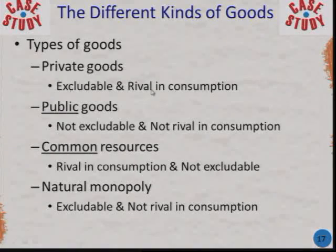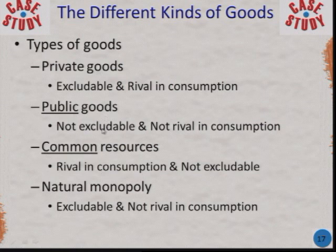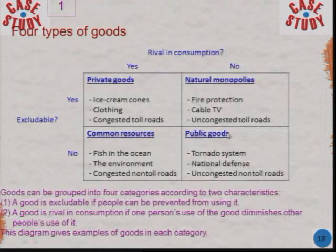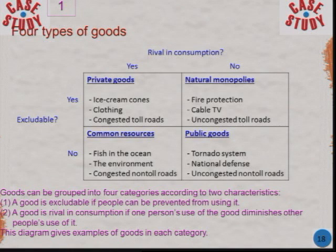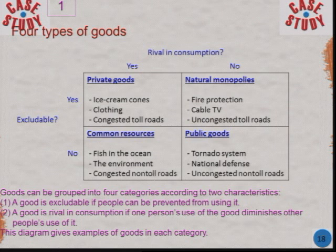Just remember the definitions of rivalry and excludability and that there are different types of goods for each combination. The summary slide shows those four types of products: private goods, public goods, common resources, and natural monopolies. That is the end of Chapter 11.